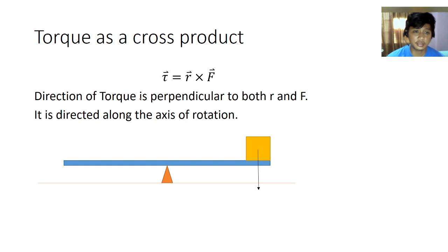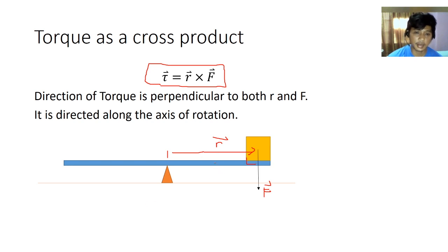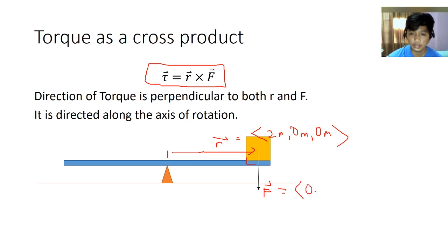Torque as a cross product: the direction of torque is perpendicular to both R and F. For torque, it has to be R cross F, not F cross R — the order of these vectors really matters. R is our position vector and F is, in this case of a seesaw, the weight of the box. If R is purely horizontal, we define R as ⟨2, 0, 0⟩ meters — no y or z component. And if the force is 90 newtons downward, F equals ⟨0, −90, 0⟩ newtons.